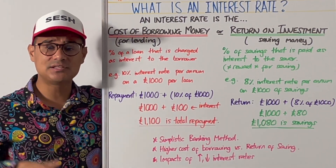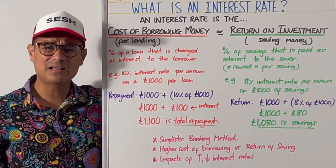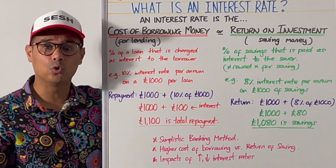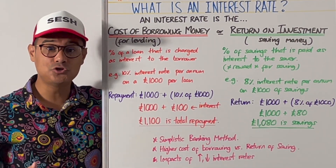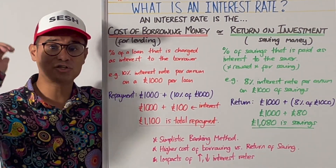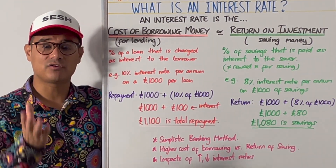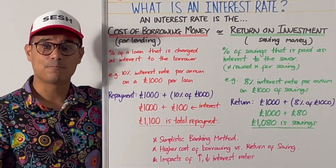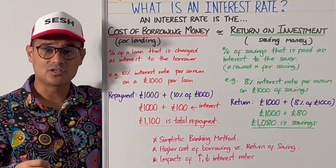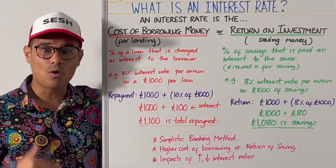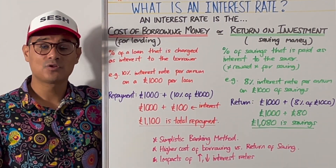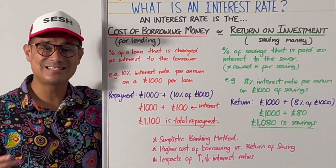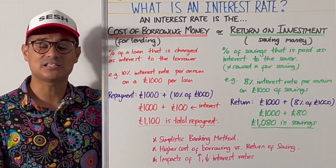In the UK, interest rates are set by the Bank of England, and the Bank of England uses interest rates as its main tool to keep inflation in check. If inflation is high — above the 2% target — then interest rates will be increased, because that will reduce consumption and reduce investment by businesses. On the other side, if inflation is lower than the 2% target, then interest rates will be lowered to try and stimulate consumption and stimulate investment in an economy.